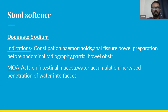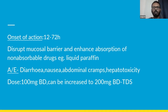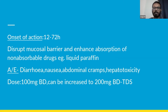The next category is stool softeners. Docusate sodium is indicated for constipation, hemorrhoids, anal fissure, bowel preparation for abdominal radiography, and partial bowel obstruction. Its mechanism of action is that it acts on the intestinal mucosa, causes water accumulation, and increases the penetration of water into fecal material. The usual onset of action is 12 to 72 hours. An important note is that docusate sodium disrupts the mucosal barrier and enhances absorption of other non-absorbable drugs, so it should not be prescribed together with liquid paraffin. Major adverse effects are diarrhea, nausea, abdominal cramps, and hepatotoxicity. The dose is 100 mg daily, which can be increased to 200 mg twice a day based on response.